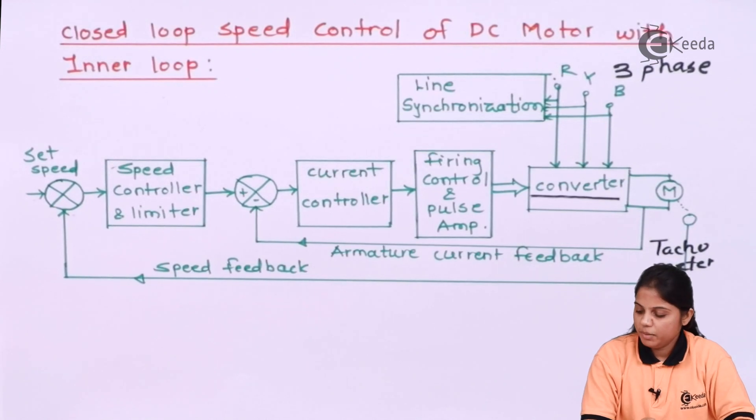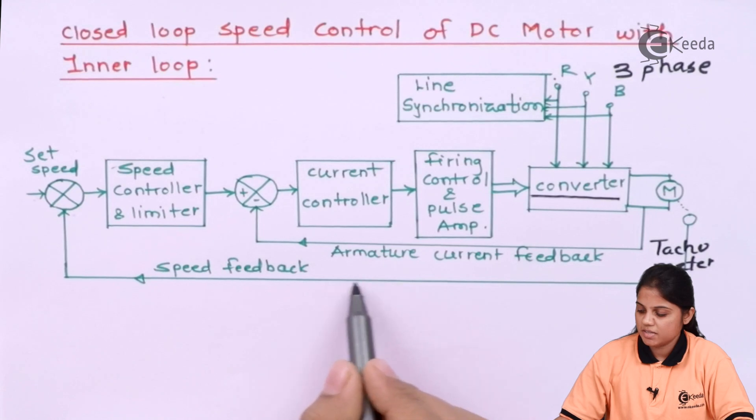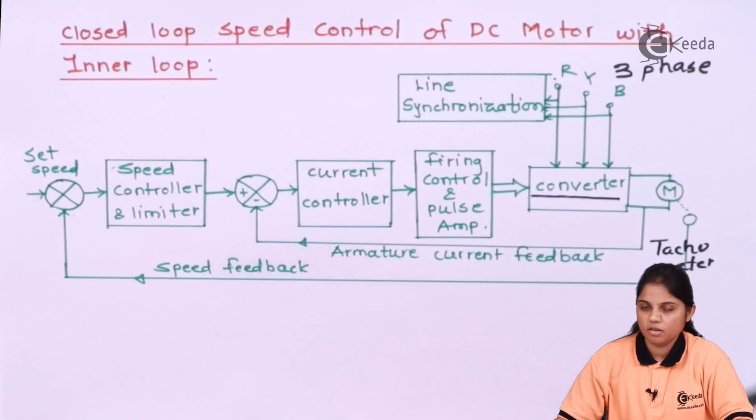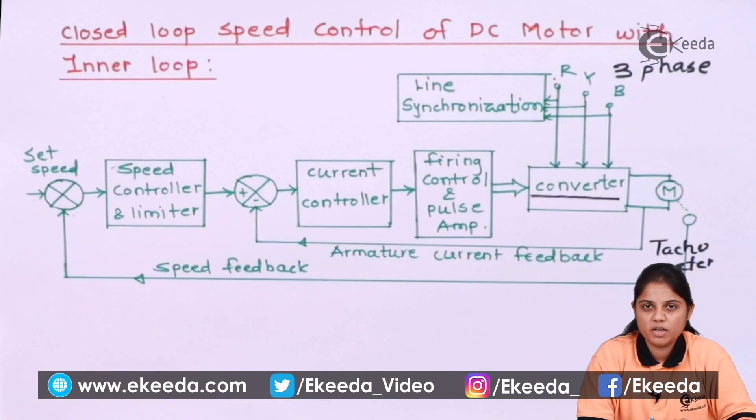Now suppose if you are only providing a speed as a feedback, you have only this as a feedback loop and you do not have an inner loop. That is what we were doing in the previous closed loop control.